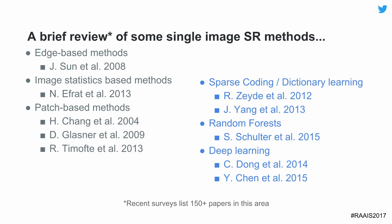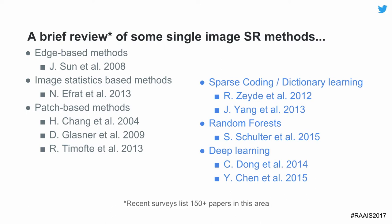In the past, people have come up with a whole variety of methods, ranging from simple statistic-based methods to patch-based approaches, sparse coding, dictionary learning, random forests, and more recently deep learning has come into this as well. That's where we start our story — from the deep learning side.